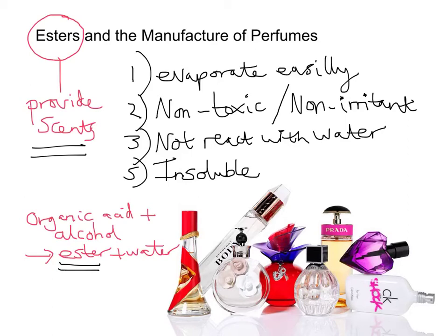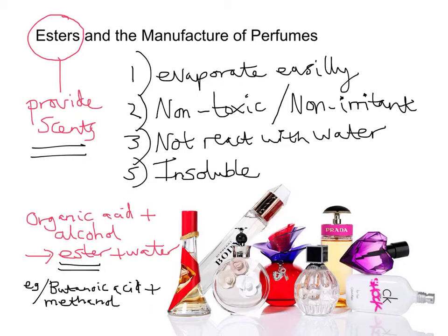Let's think of an example. An example of an organic acid could be butanoic acid. So if we were to use butanoic acid and an alcohol — in this example, methanol — what we'd create is water but also our ester, which in this example would be methylbutanoate. In another example, if we use ethanoic acid, the alcohol would be ethanol, and we'd create ethyl ethanoate ester.